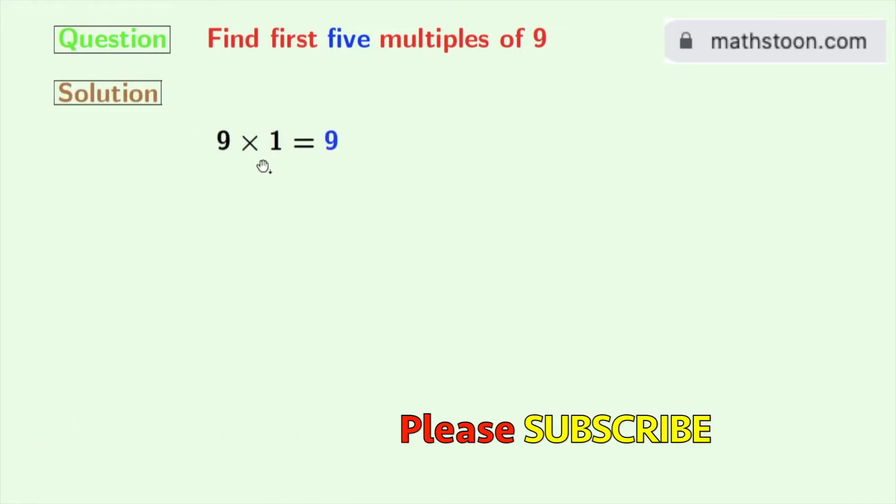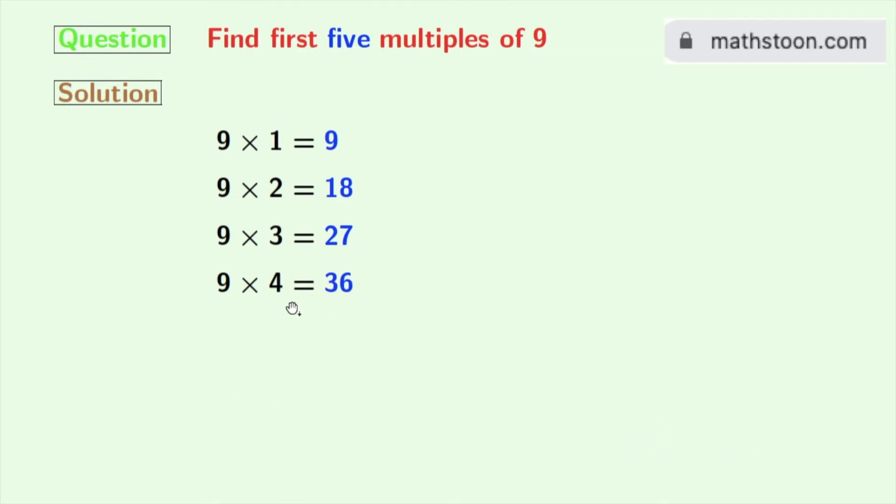9 times 1 is 9, 9 times 2 is 18, 9 times 3 is 27, 9 times 4 is 36, 9 times 5 is 45.